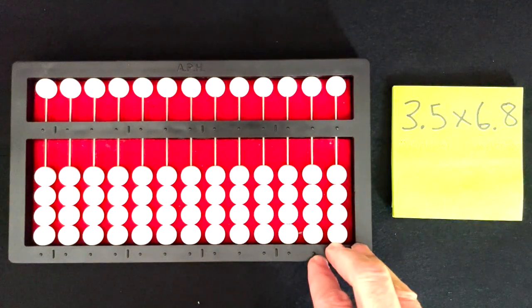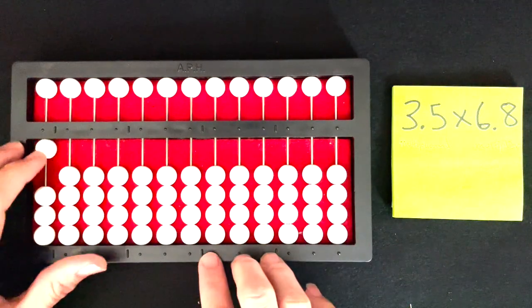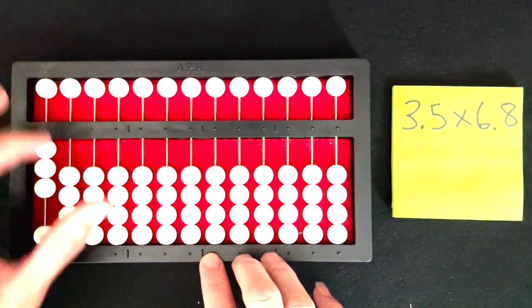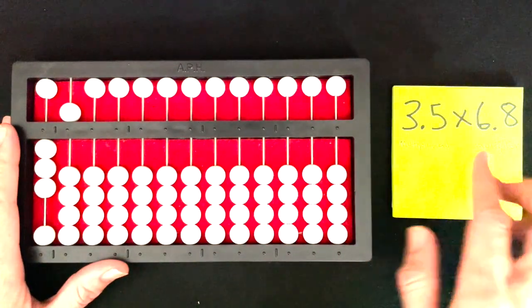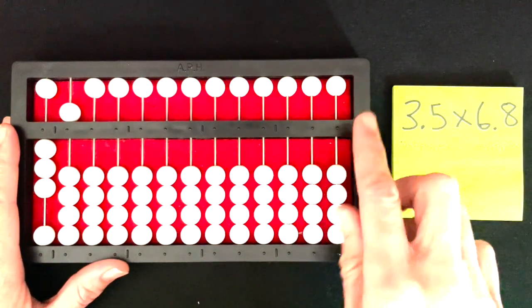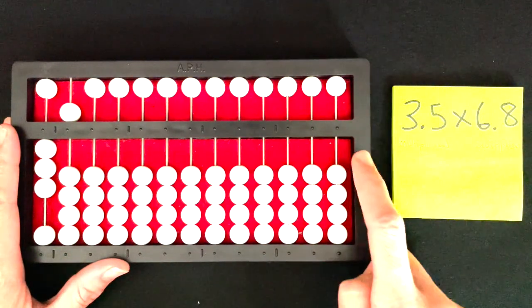We're going to start by setting the multiplicand on the far left-hand side of the abacus: 1, 2, 3, and then 1, 2, 3, 4, 5. Now I'm going to set my multiplier starting with the far right-hand side of the abacus. I'm going to say each digit plus the multiplication side.